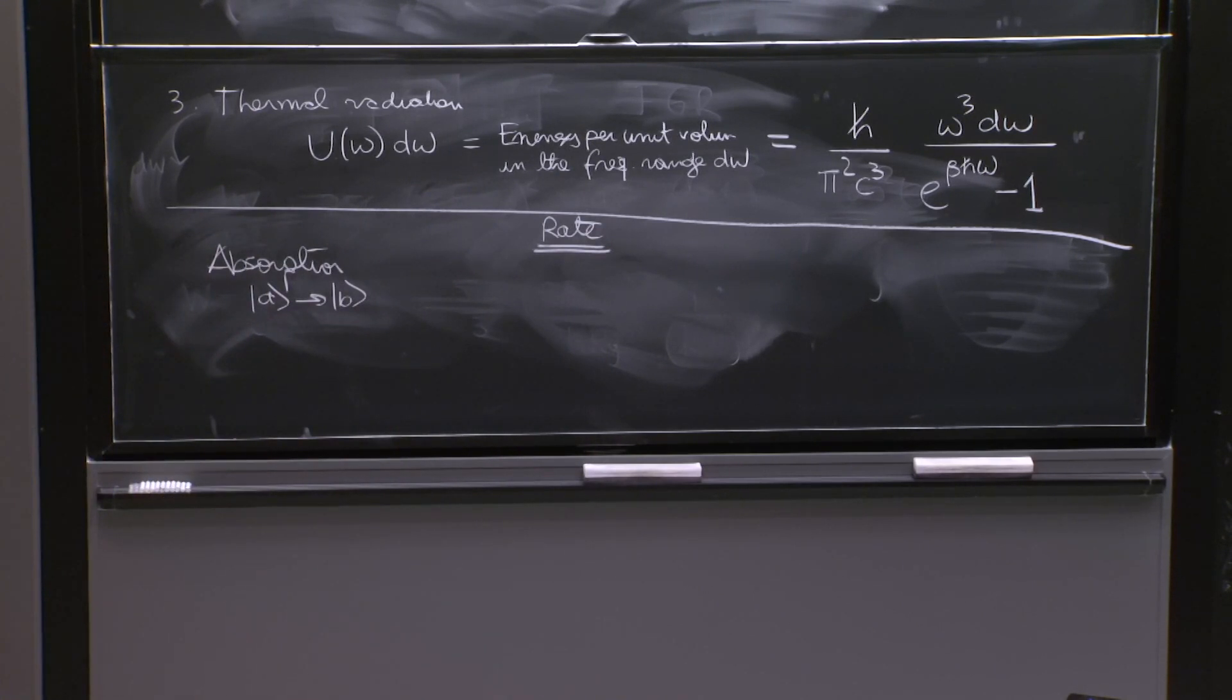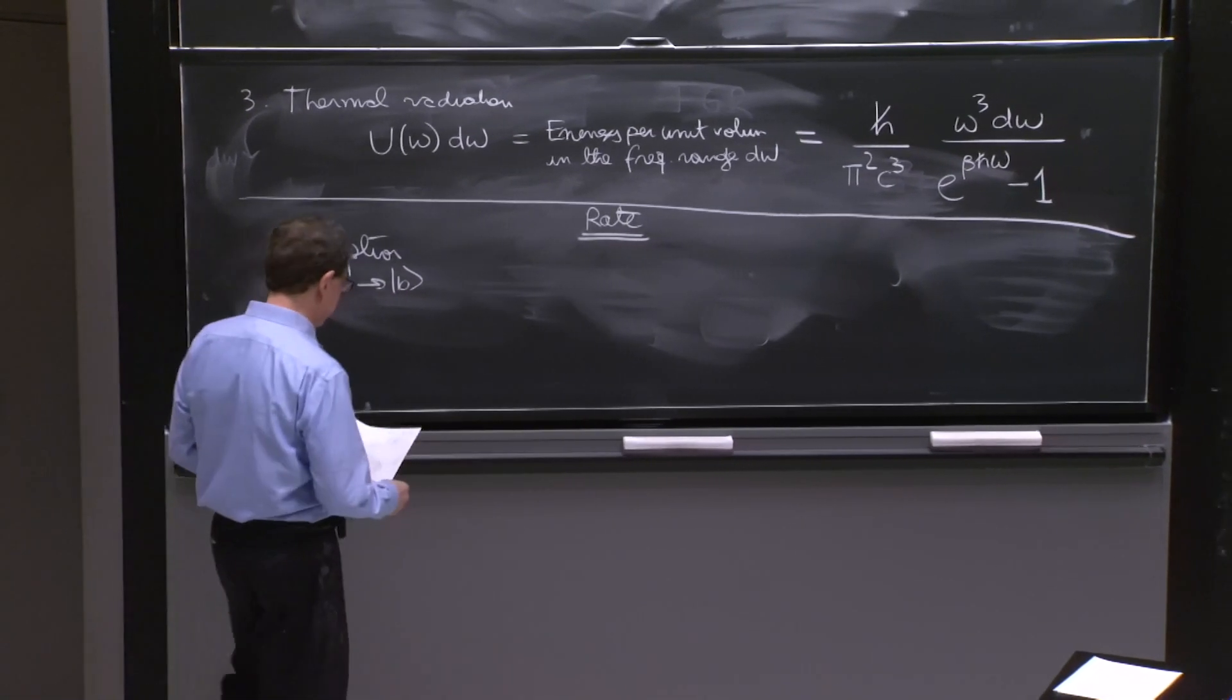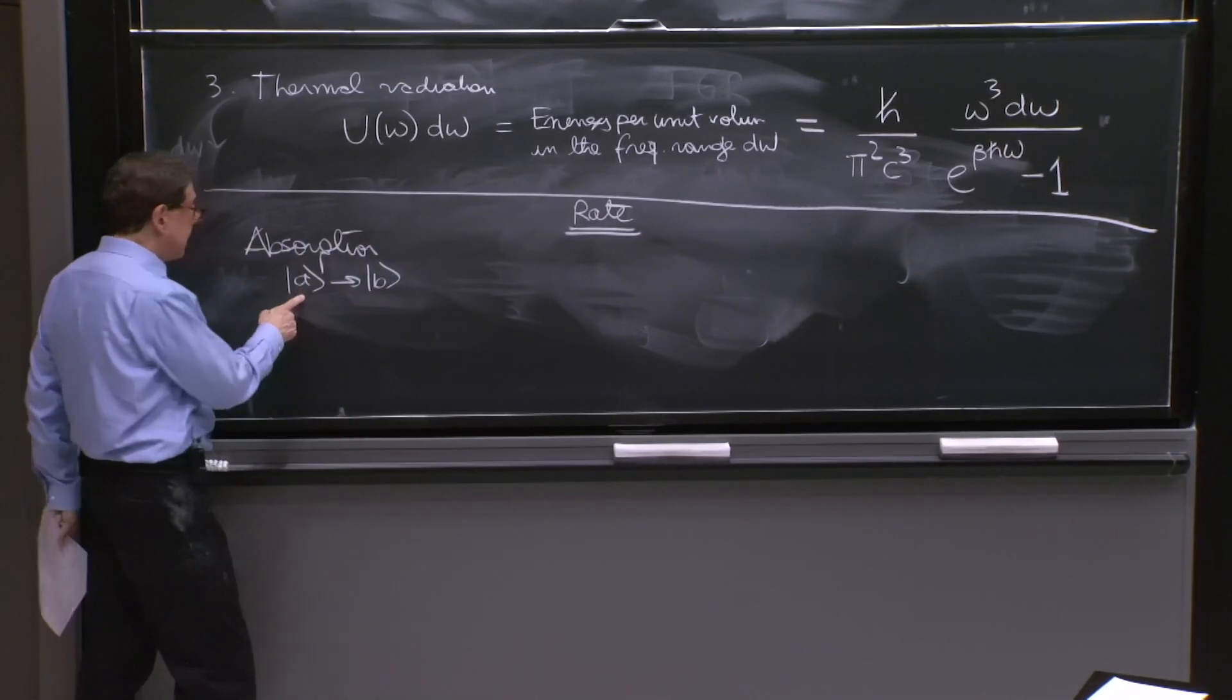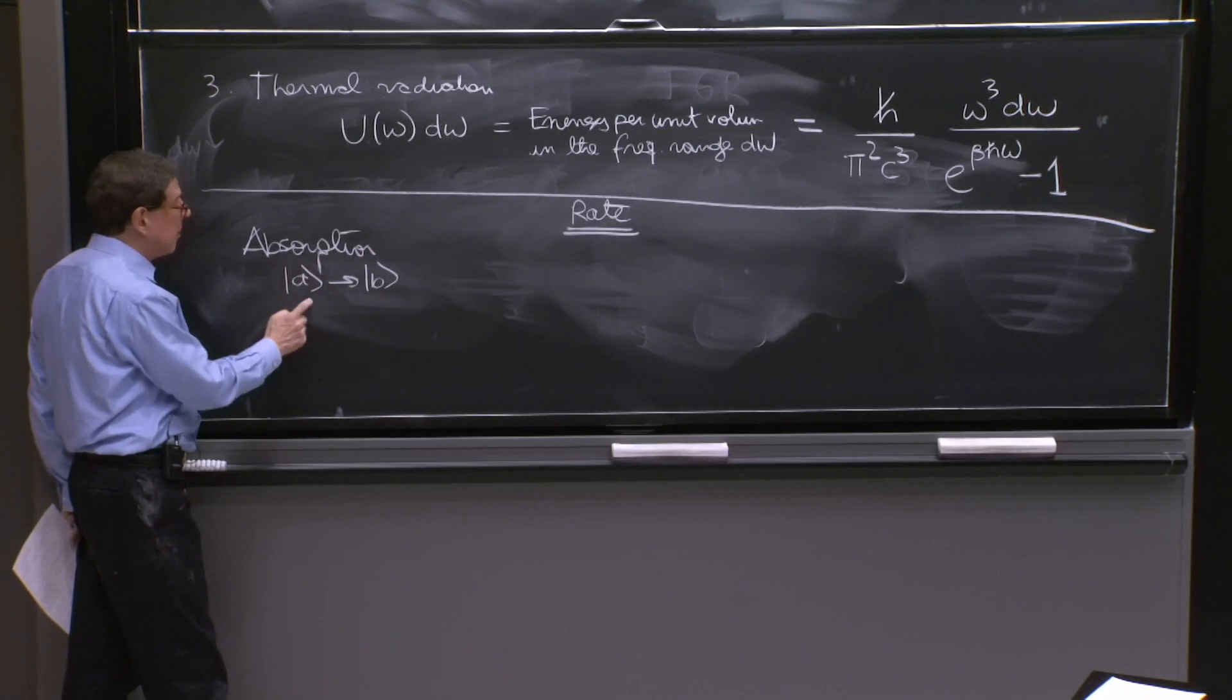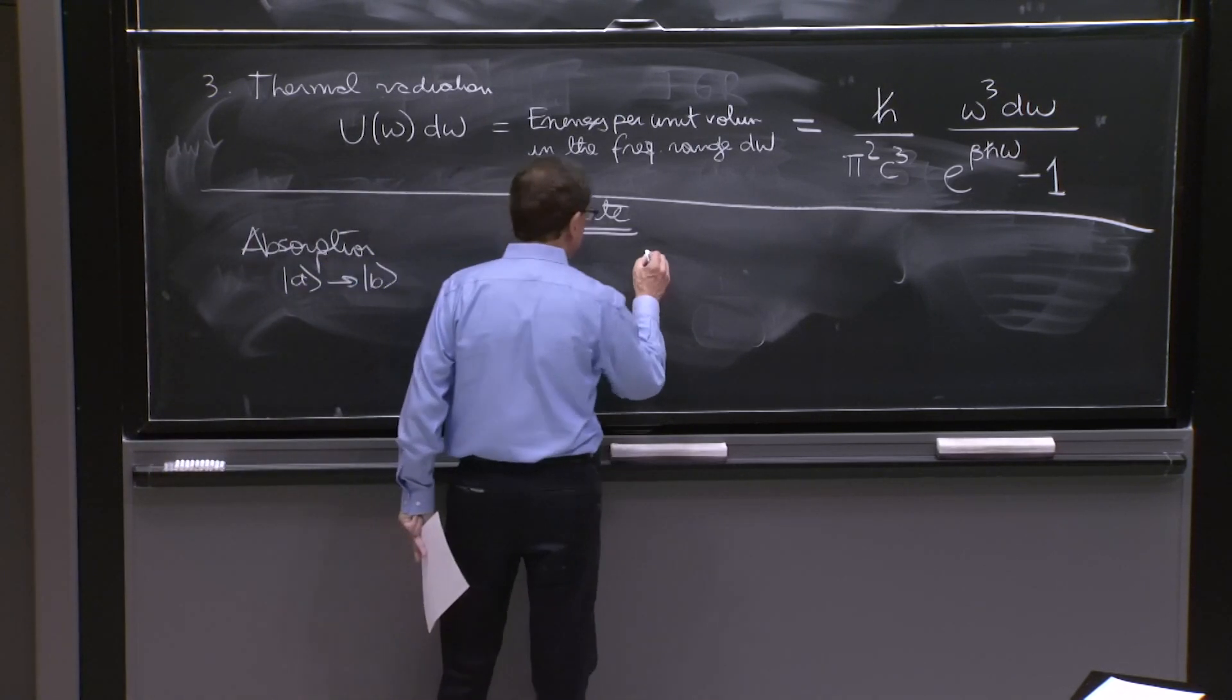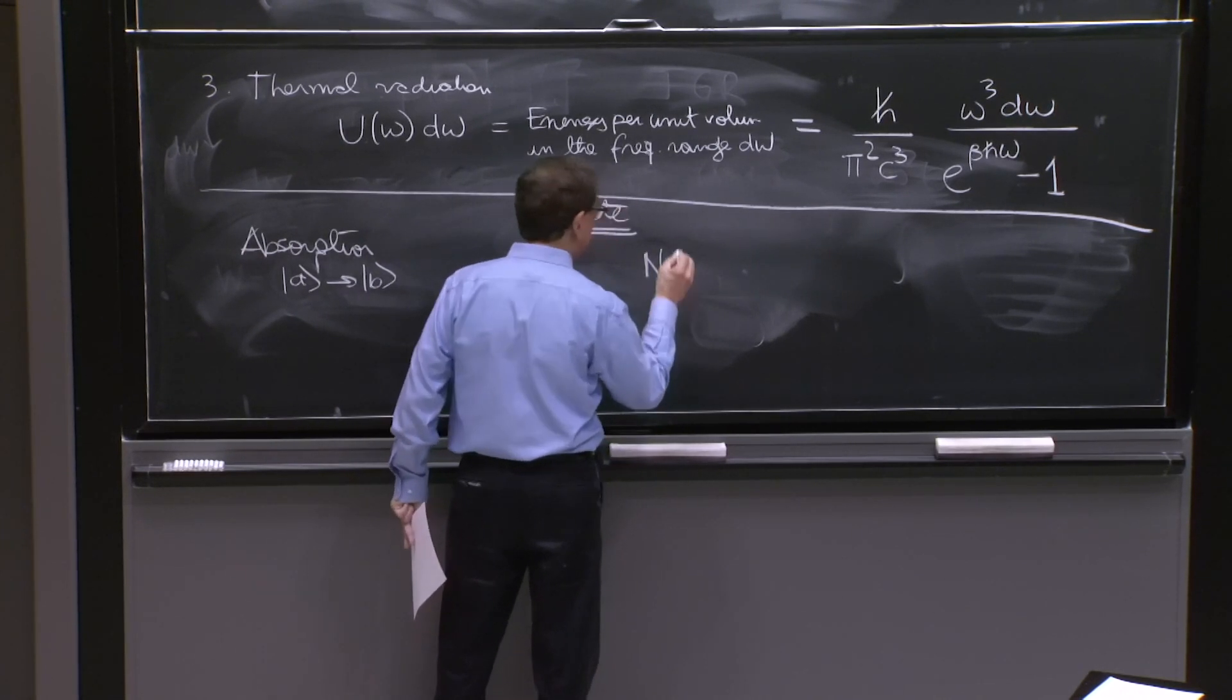So what would the rate depend on? Well, here's some little assumptions. Certainly if you don't have particles in the A state, you cannot have this process. So this process, the total rate that we observe in the box, will depend on NA.